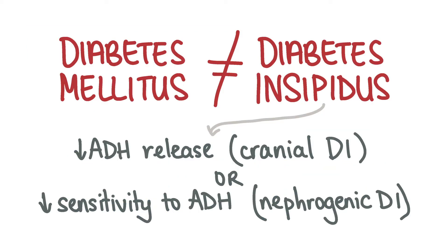Diabetes mellitus is not the same as diabetes insipidus. Diabetes insipidus is a condition caused by either reduced ADH release from the pituitary gland or when the kidneys become less sensitive to ADH, causing patients to produce copious amounts of dilute urine.